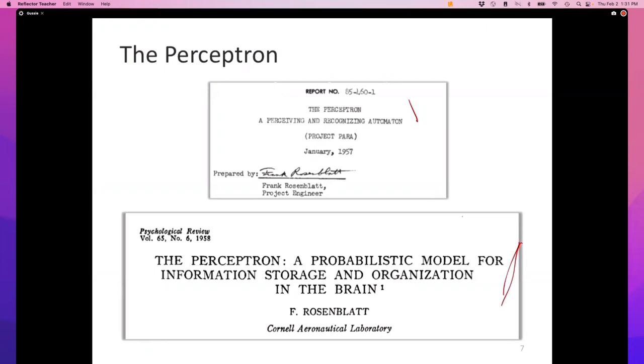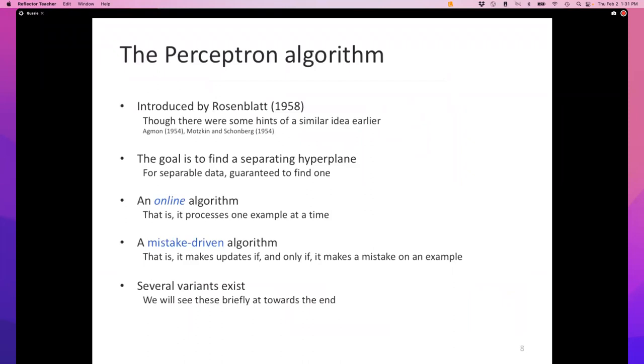This really caught the public imagination - there were New York Times articles about how we're going to have machines that will walk and talk among us in the next few years. That's how wildly popular this algorithm was. Turns out this idea existed before Rosenblatt's 1958 paper. If you're interested, check out these papers - they appeared in a Canadian Journal of Mathematics. It took me some effort to find them because it was presented as a mathematical curiosity rather than as a learning algorithm or model of the brain.